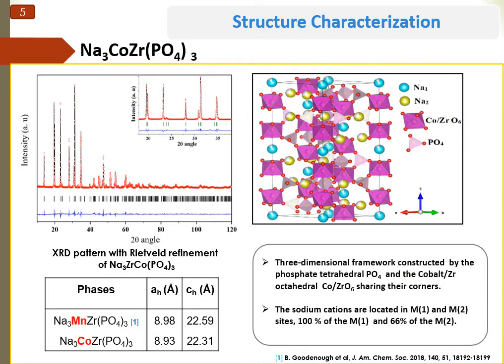Now, let's move to the structural characterization. The analysis of X-ray powder diffraction data shows that the materials have hexagonal symmetry with the space group R3C with the following cell parameters. The comparison of the cell parameters with those obtained by the Goodenough group confirmed the goodness of the refinement and confirmed the stability of the cobalt-based materials. The structure of our materials consists of a three-dimensional framework constructed by phosphate (PO4) and cobalt-zirconium oxide groups sharing their corners. The sodium ions are located in both NASICON sites M1 and M2.